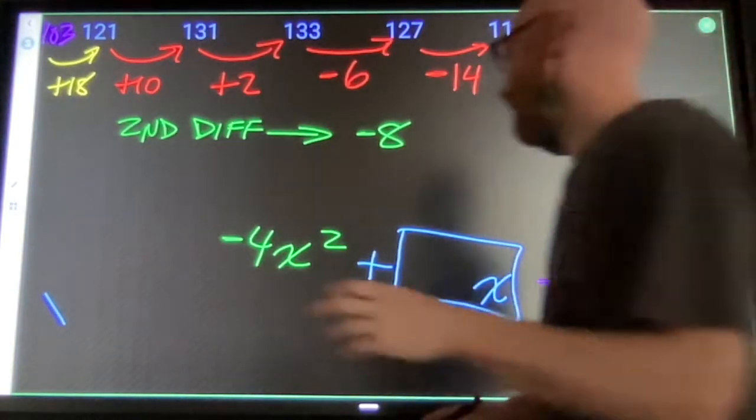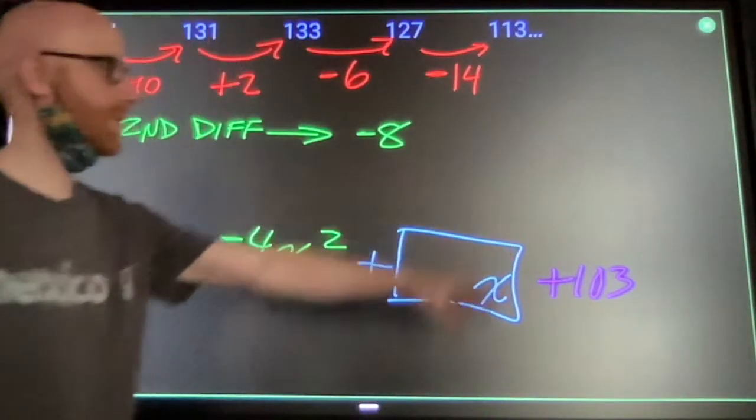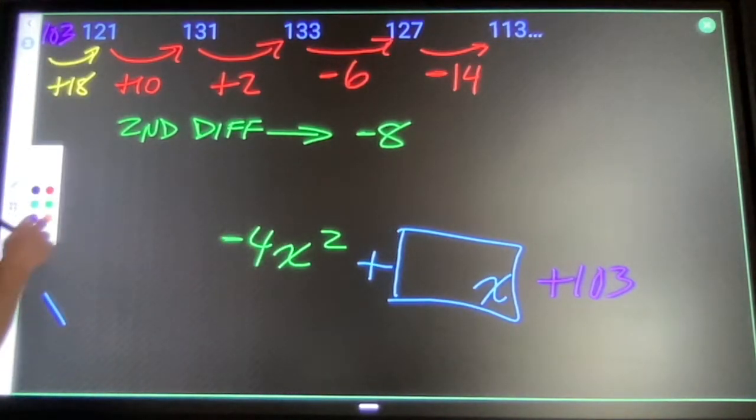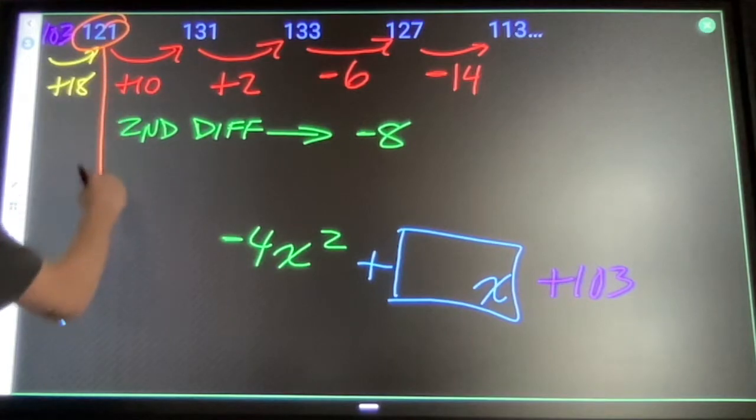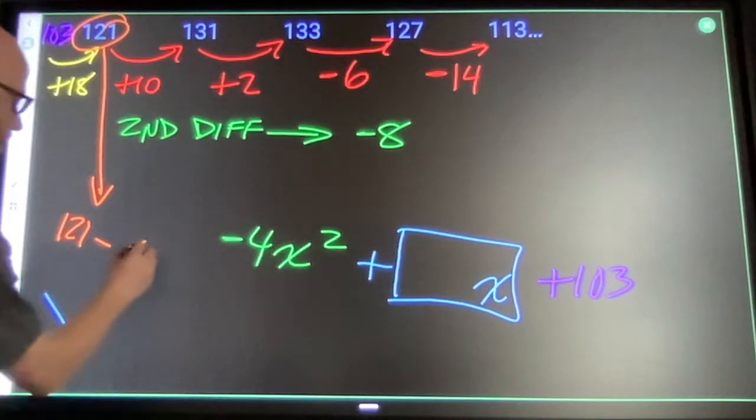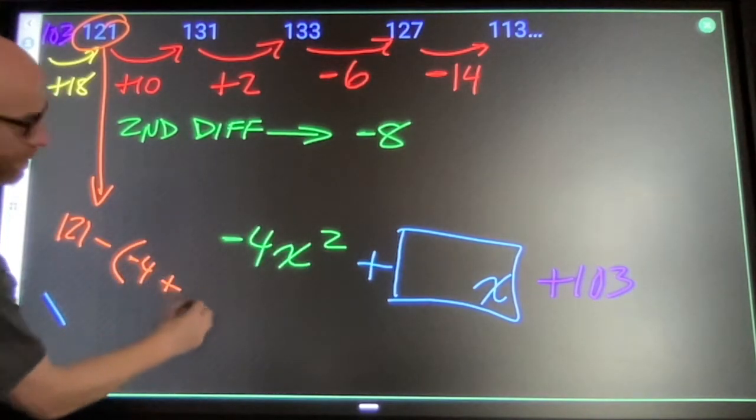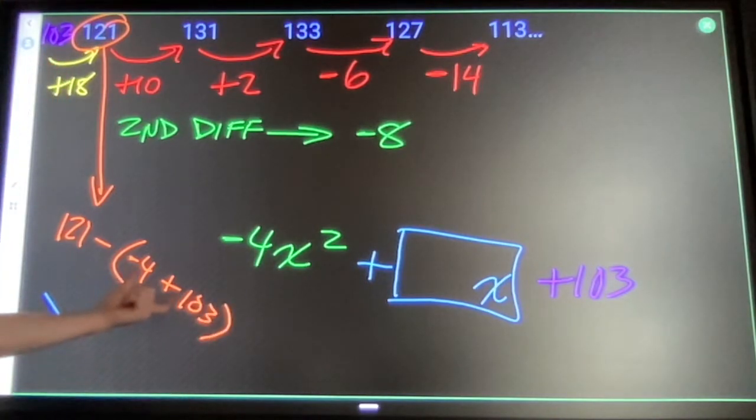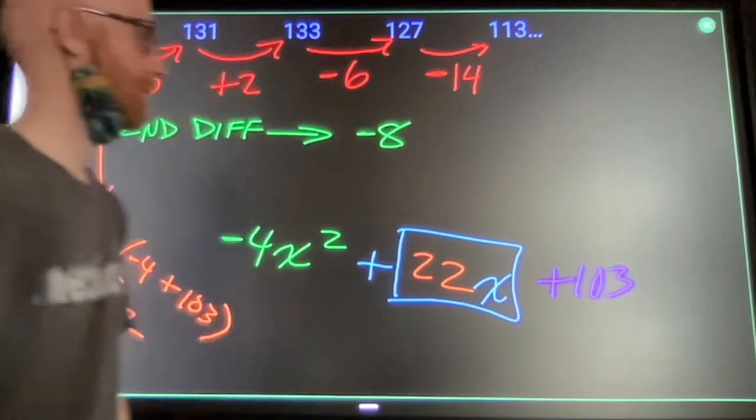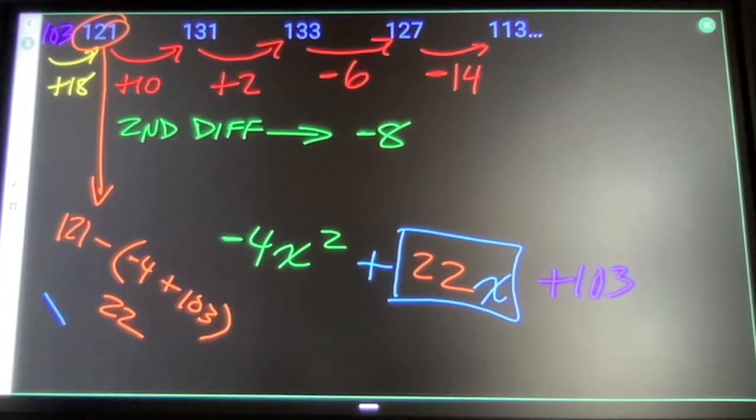And when I have my first and my third coefficients, this center one is just going to be first number minus 103. So 99, 121 minus 99 is 22 plus 22x.